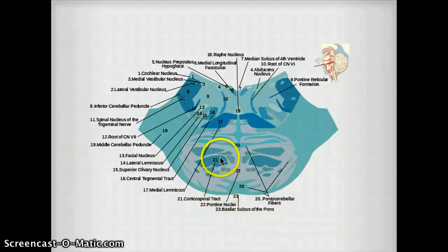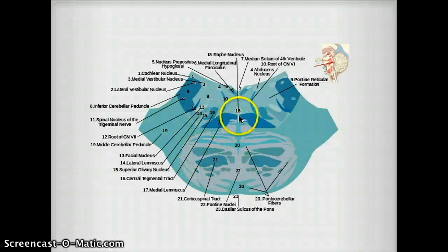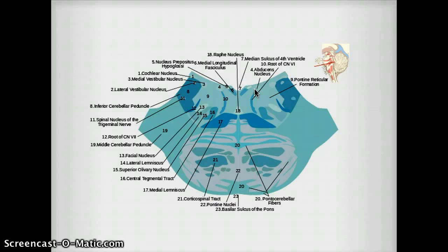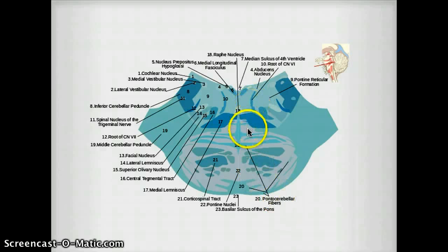This region right here, region number 21, is the corticospinal tract. This is the medial lemniscus. This is the abducens nucleus. In inferior pontine syndrome, usually the abducens nucleus is not the one that's affected — it's actually the abducens nerve that has an effect ipsilaterally. The abducens nucleus has its nerve coming down right here, and that's what's affected in medial inferior pontine syndrome.